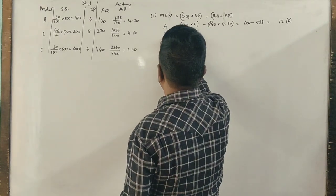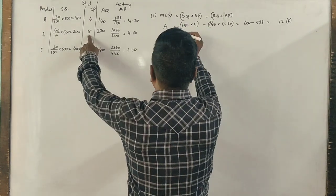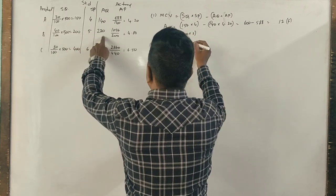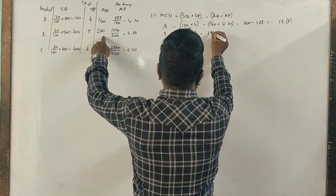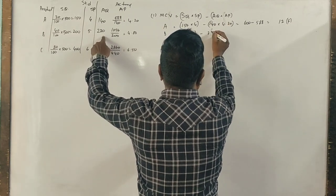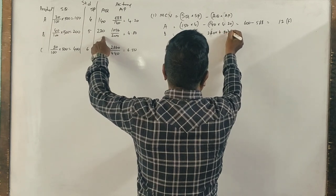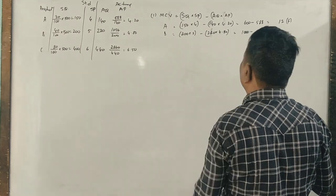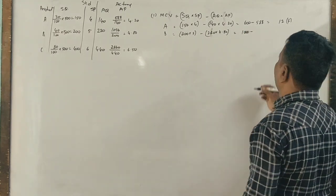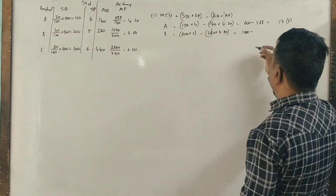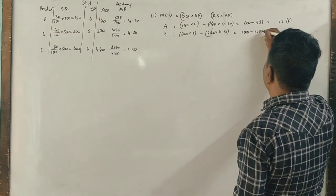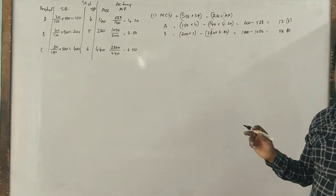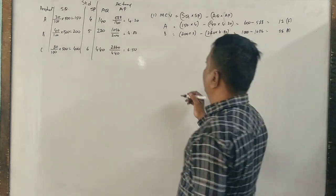Now let's see B. B - actual quantity required is 200, actual price is 5. Wait, 220. 220 into 4.8. Now 1,000 minus 1,056. 56 is adverse for us.